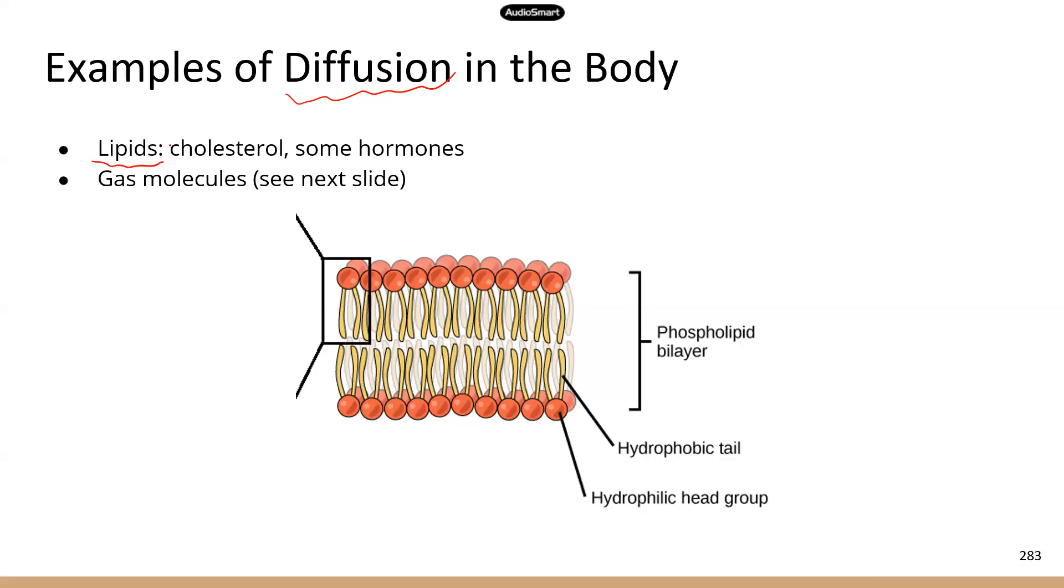These hormones, once they're secreted, they're transported by the blood. And how do they get into the cells to affect the cells? They can simply diffuse into the cells from higher concentration to low concentration.